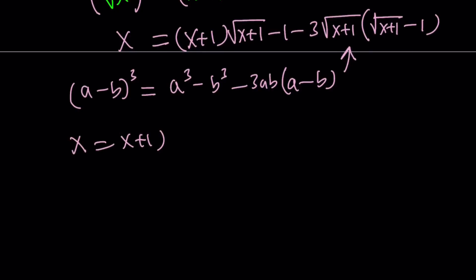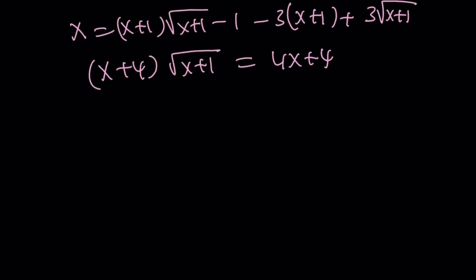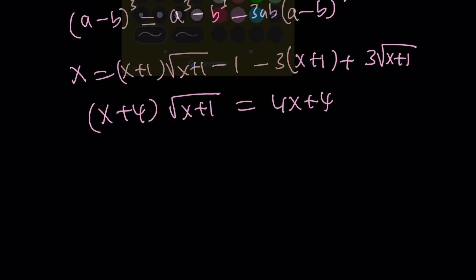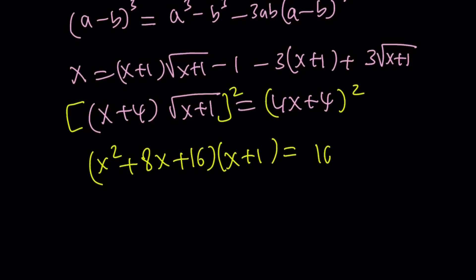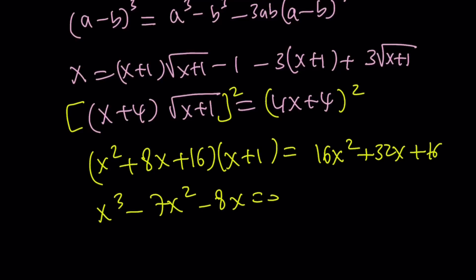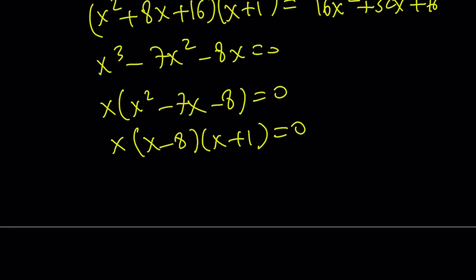Expanding gives: x equals x plus 1 times square root of x plus 1 minus 1 minus 3 times x plus 1 plus 3 times square root of x plus 1. After expanding and grouping radicals on one side, we square both sides to eliminate all radicals. That gives x plus 4 squared — which is x squared plus 8x plus 16 — multiplied by x plus 1, equaling 16x squared plus 32x plus 16. Simplifying and factoring out x: x times x squared minus 7x minus 8 equals 0, which factors as x times x minus 8 times x plus 1 equals 0. Solutions: x equals 0, x equals 8, and x equals negative 1.